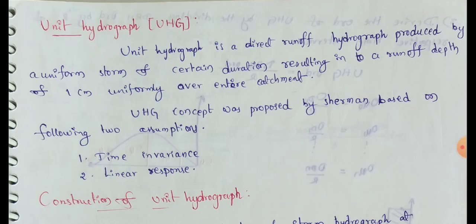Unit Hydrograph is a direct runoff hydrograph produced by a uniform stroma of certain duration, resulting into a runoff depth of 1cm uniformly over entire catchment.